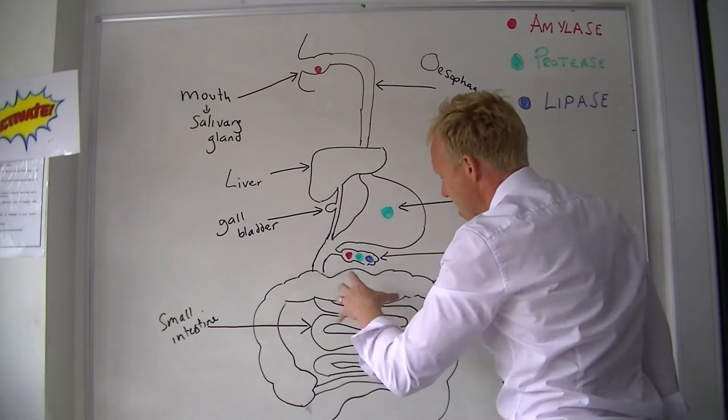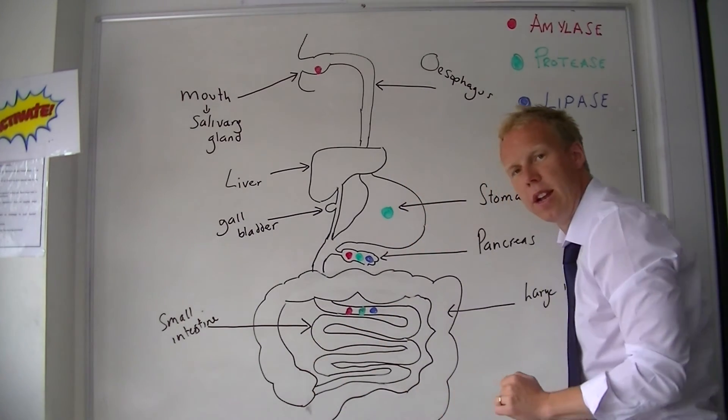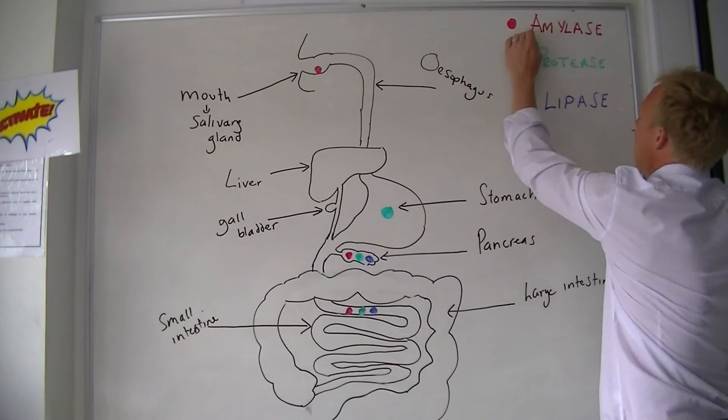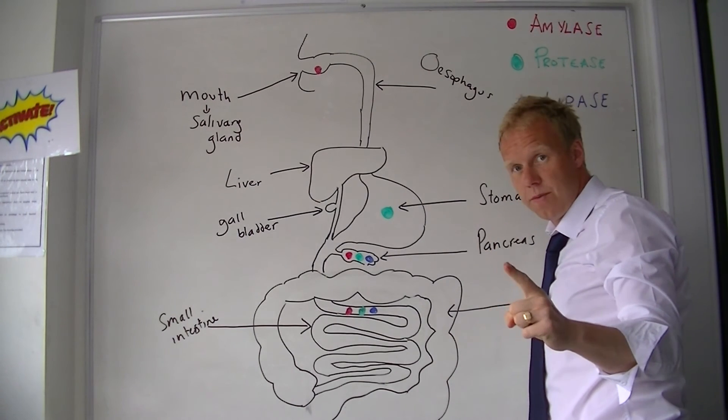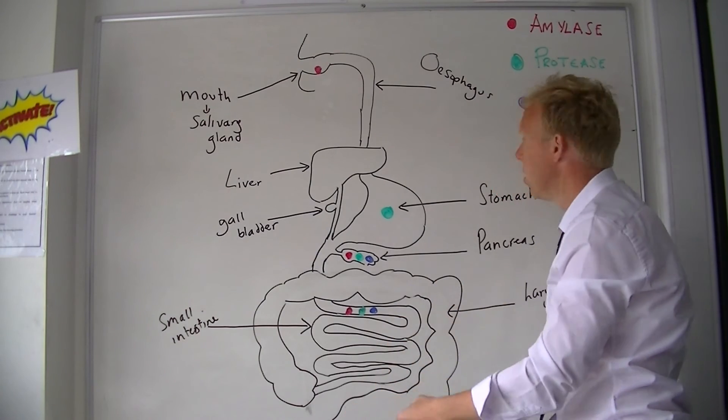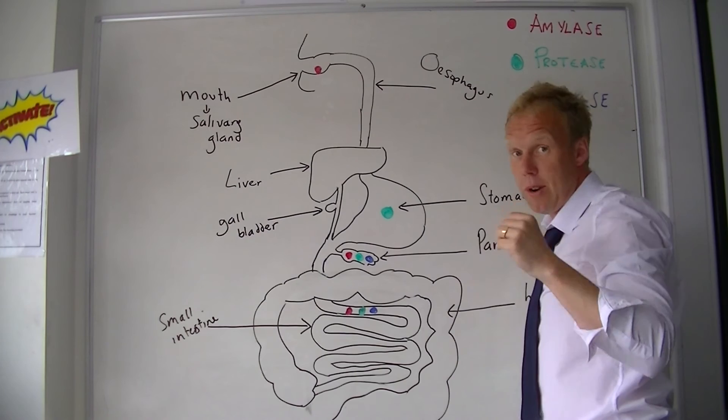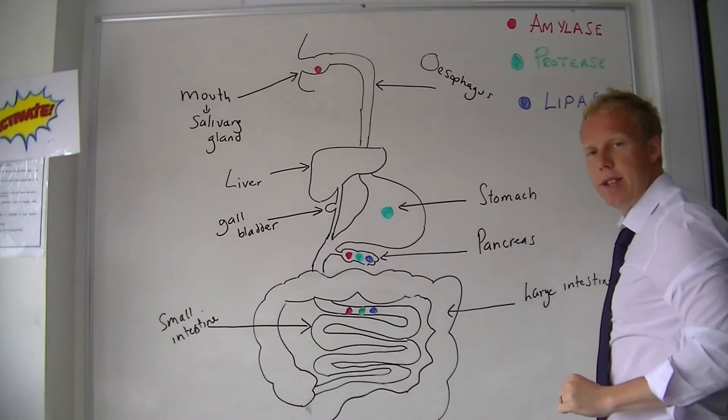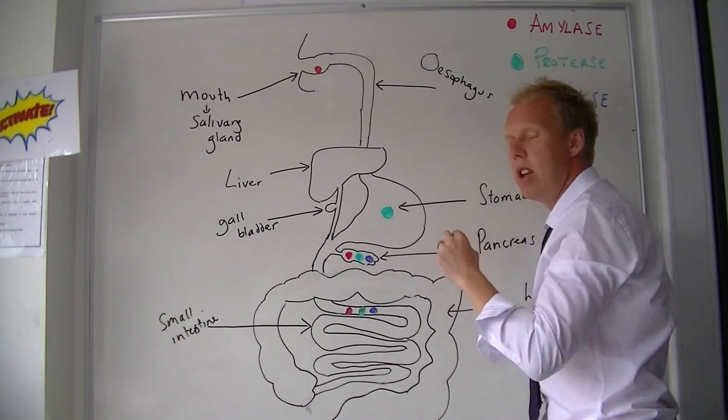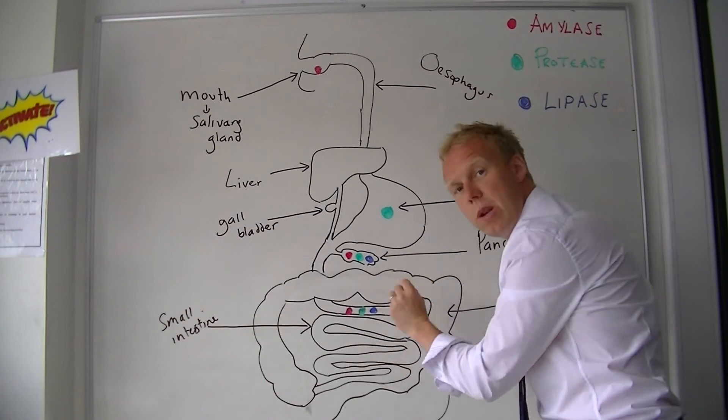So by the time we have reached towards the end of the small intestine, amylase has turned carbohydrates into glucose to be absorbed, protease has turned proteins into amino acids to be absorbed, and lipase has turned lipids into fatty acids and glycerol to be absorbed.